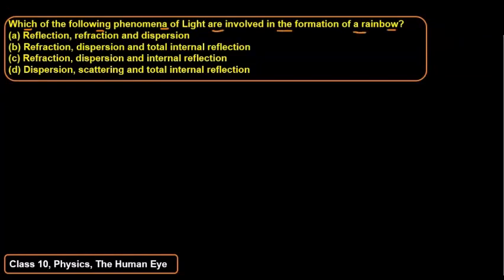We will tell you which phenomena are involved. First, I will tell you that whenever sunlight falls on tiny water droplets, there is a formation of rainbow.